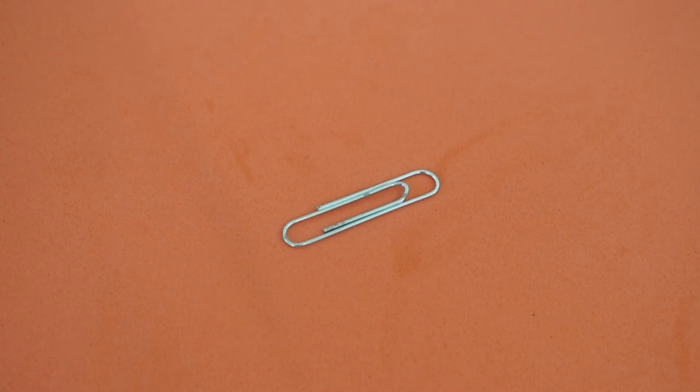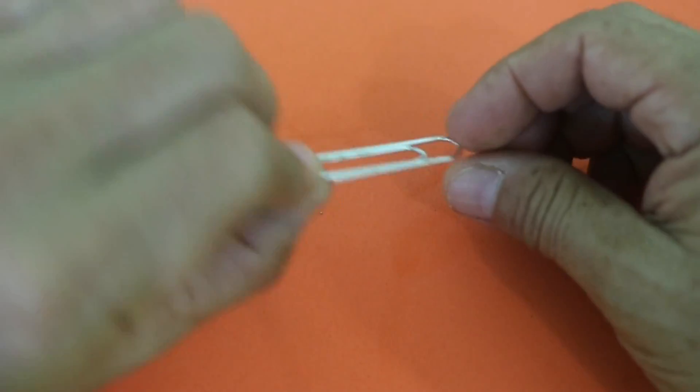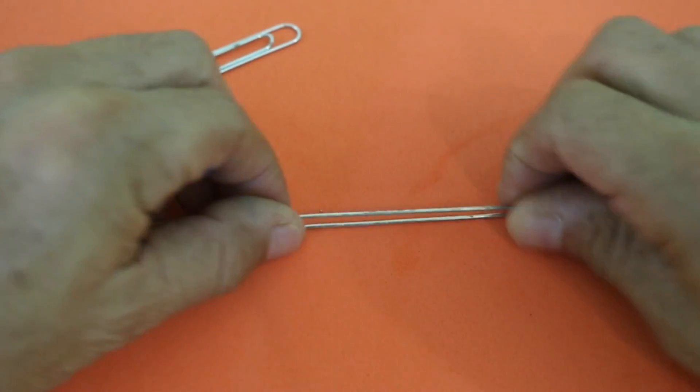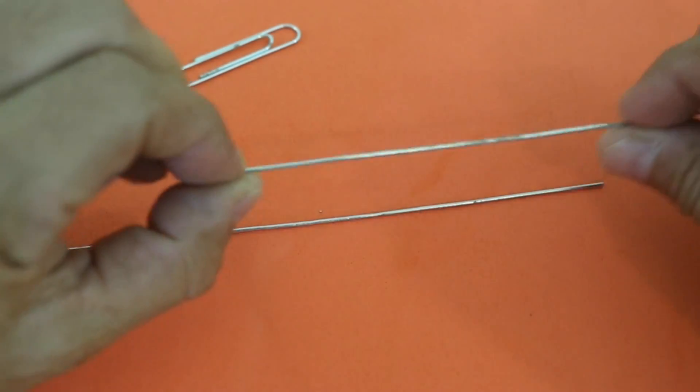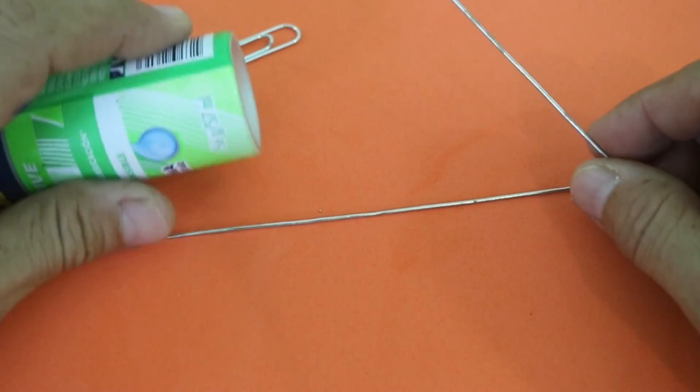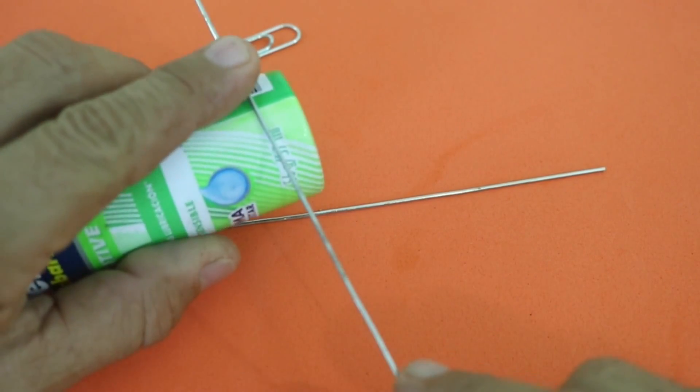You can make the feet of the robot using wire. I am using wire from common clips. First you need to straighten the wire and then make half a circle using for example a cylindrical object.